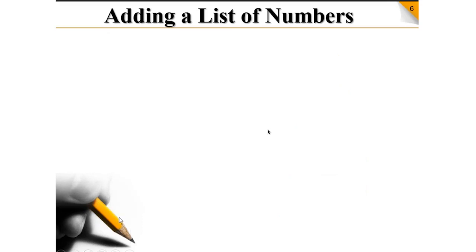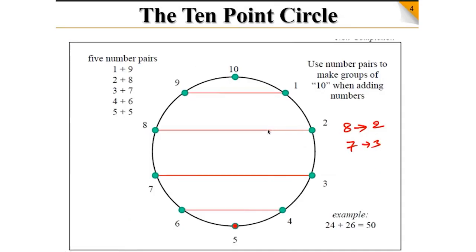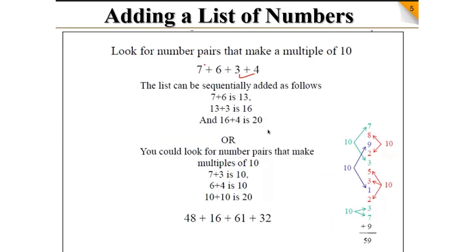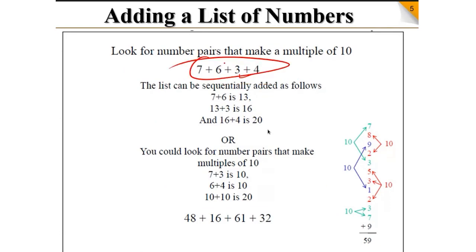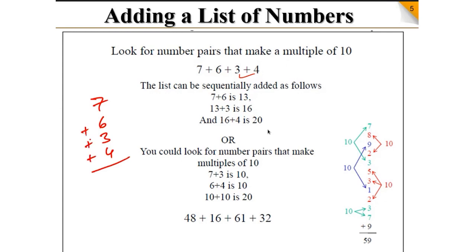Now I'm going to teach you the Addies. Suppose somebody asks you to add 7 plus 6 plus 3 plus 4. Generally what you do is add top to bottom: 7 plus 6 plus 3 plus 4, and the answer is 20. This is a small number so you can do it quickly, but if the number is big it will become difficult.